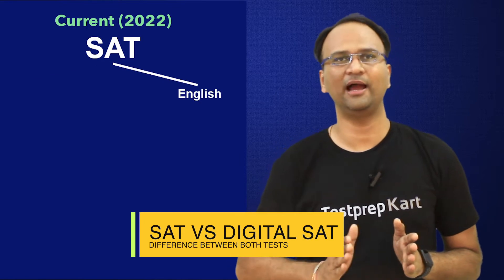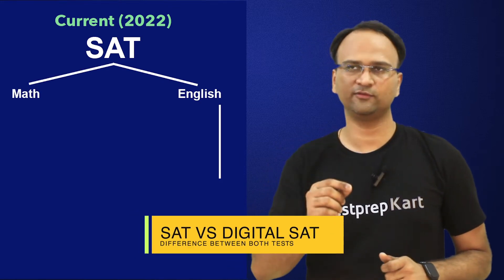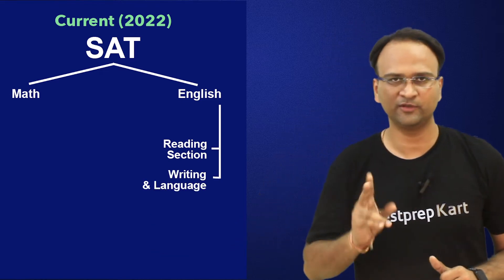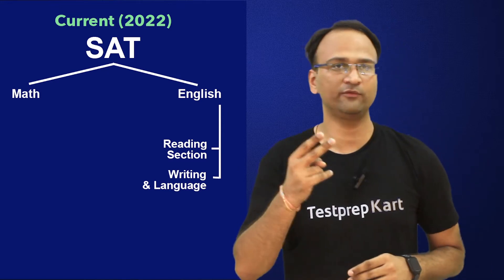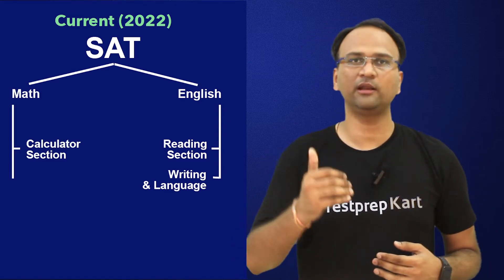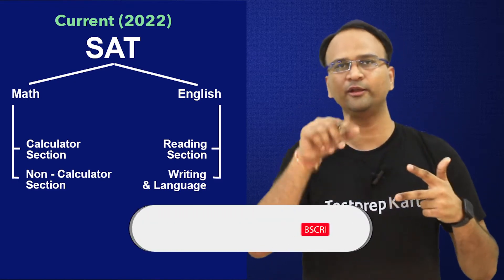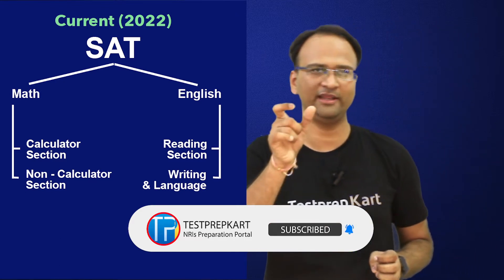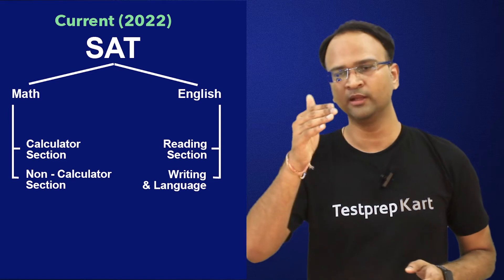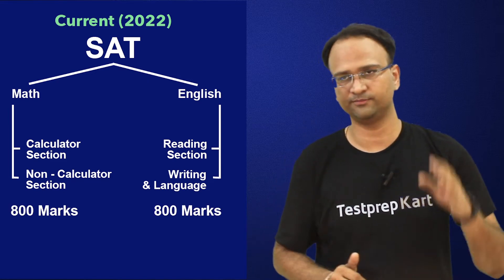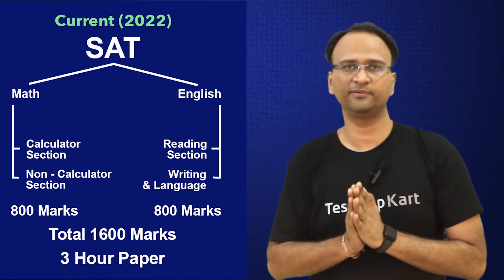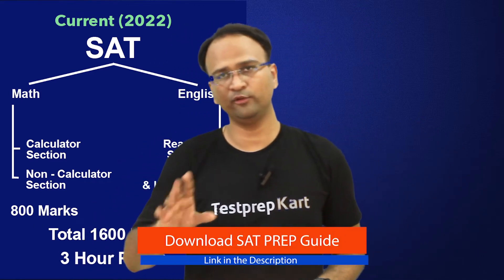In SAT General, we have English and Mathematics. English has two sections: Reading, and Writing and Language. Mathematics also has two sections: a calculator section and a non-calculator section. So two subjects are divided into four different streams. The entire paper is three hours. This is the SAT as it stands through 2022.